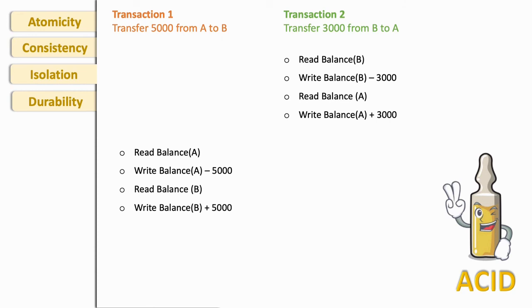Now think if we transfer three thousand from account B to A first, and then transfer five thousand from account A to B, then also we will get same result. These two transactions are separate, not interfering each other's data.